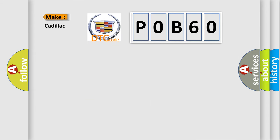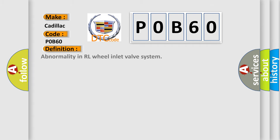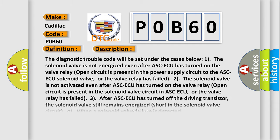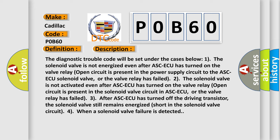The number itself does not make sense to us if we cannot assign information about what it actually expresses. So, what does the diagnostic trouble code P0B60 interpret specifically for Cadillac vehicles? The basic definition is: Abnormality in RL wheel inlet valve system. Here is a short description of this DTC code.